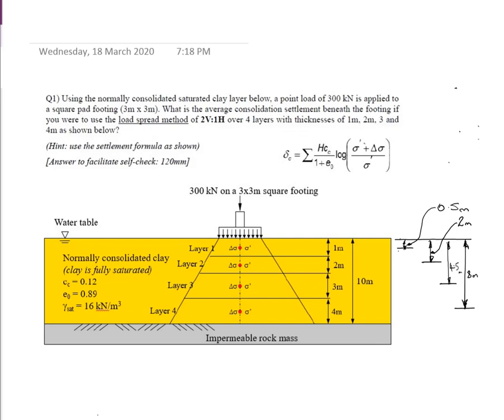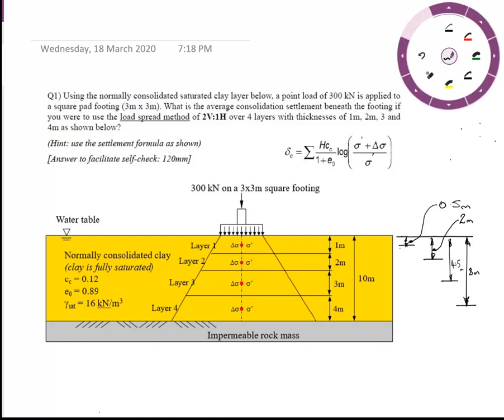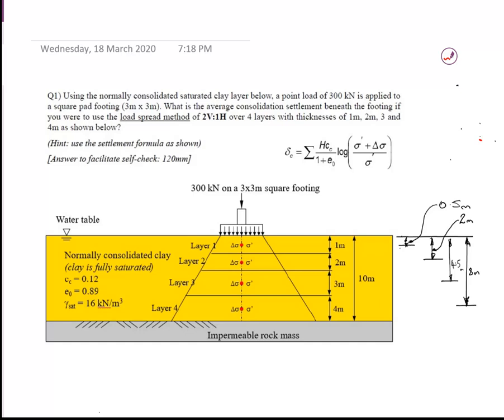A few people had trouble understanding the geometry. The easiest way to think of it is as a truncated pyramid — a 3 by 3 meter square top, with stress distributing downwards at two vertical to one horizontal. There are layers, and on the right I've marked the depths to the midpoint of each layer.